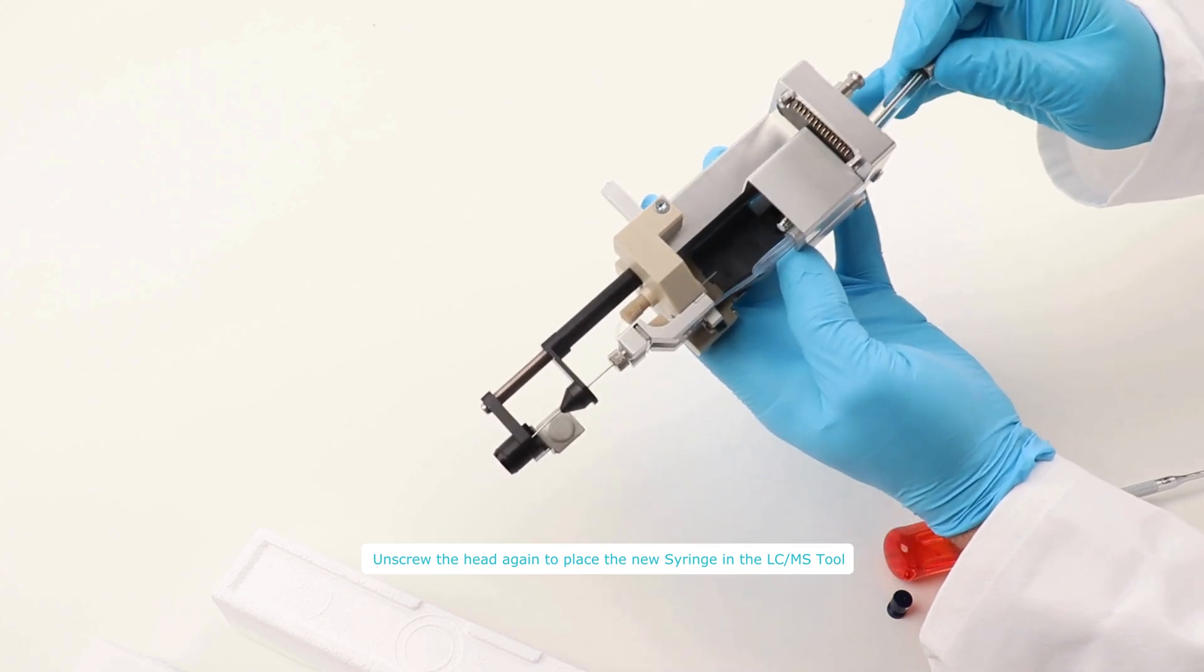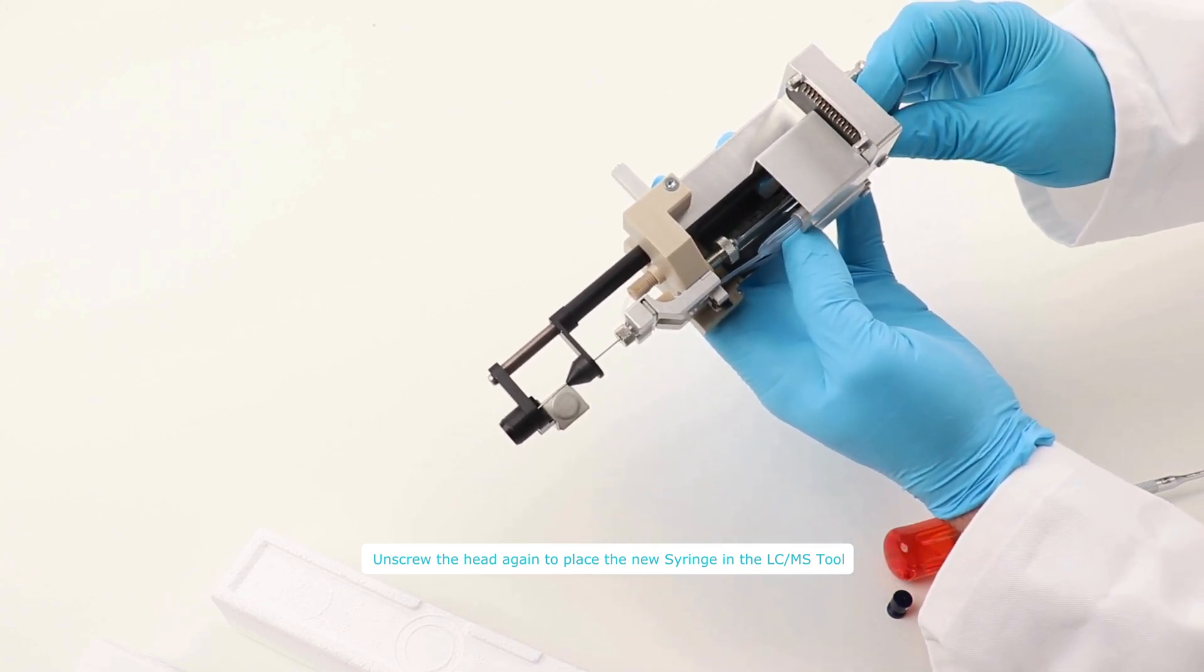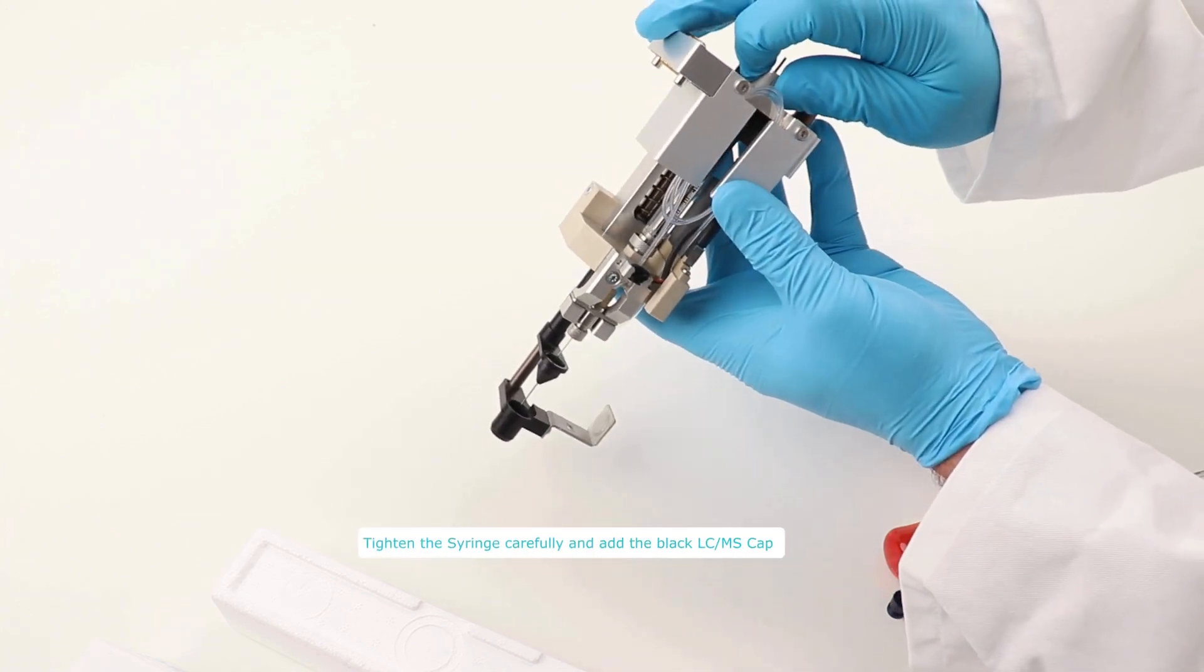Carefully insert the new syringe into the LC-MS tool and securely fasten it. Pay attention that the needle enters smoothly. Once the new syringe is in place, screw it in.